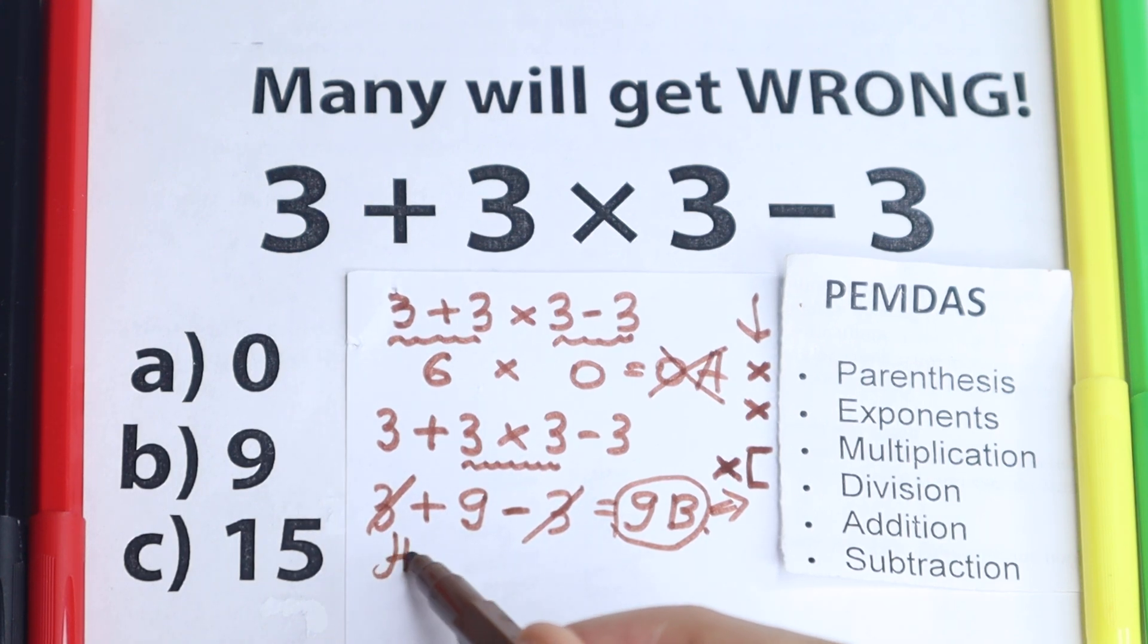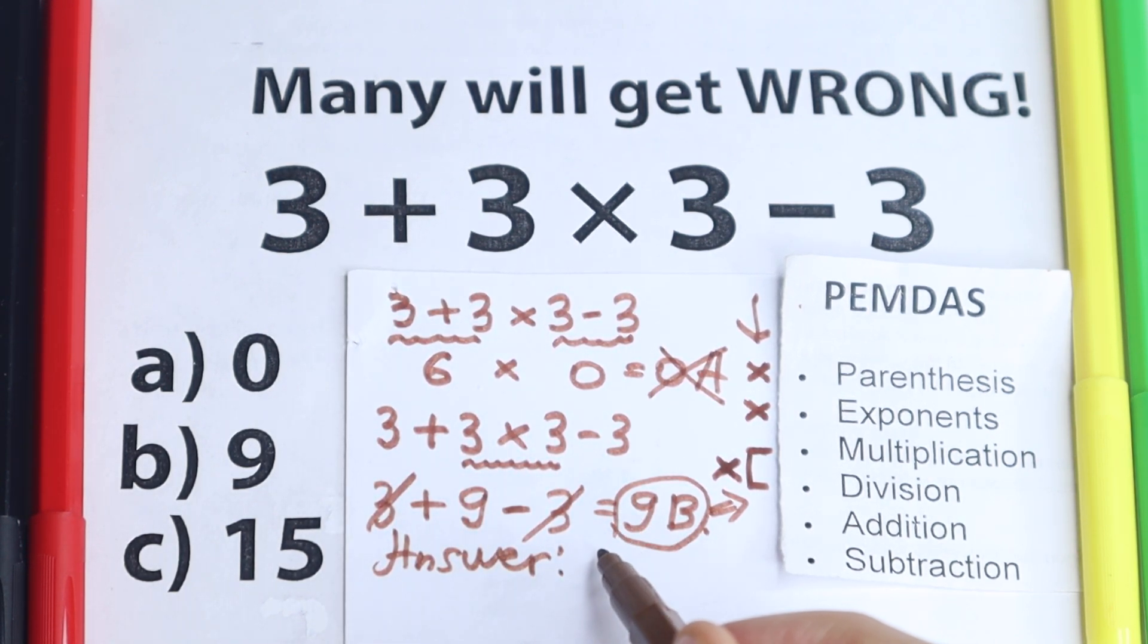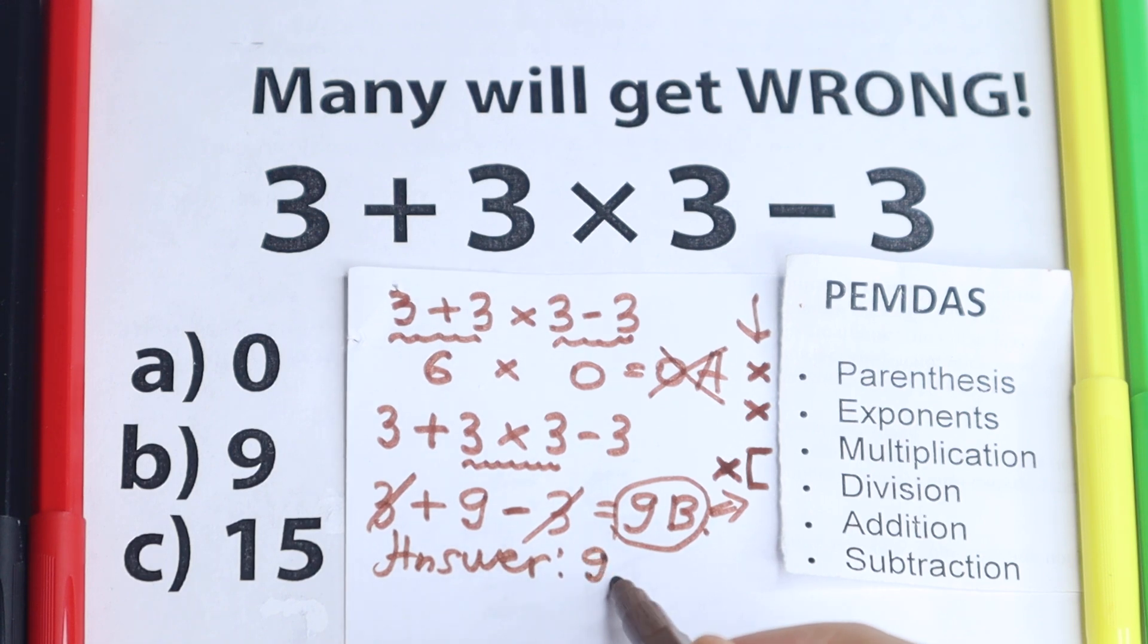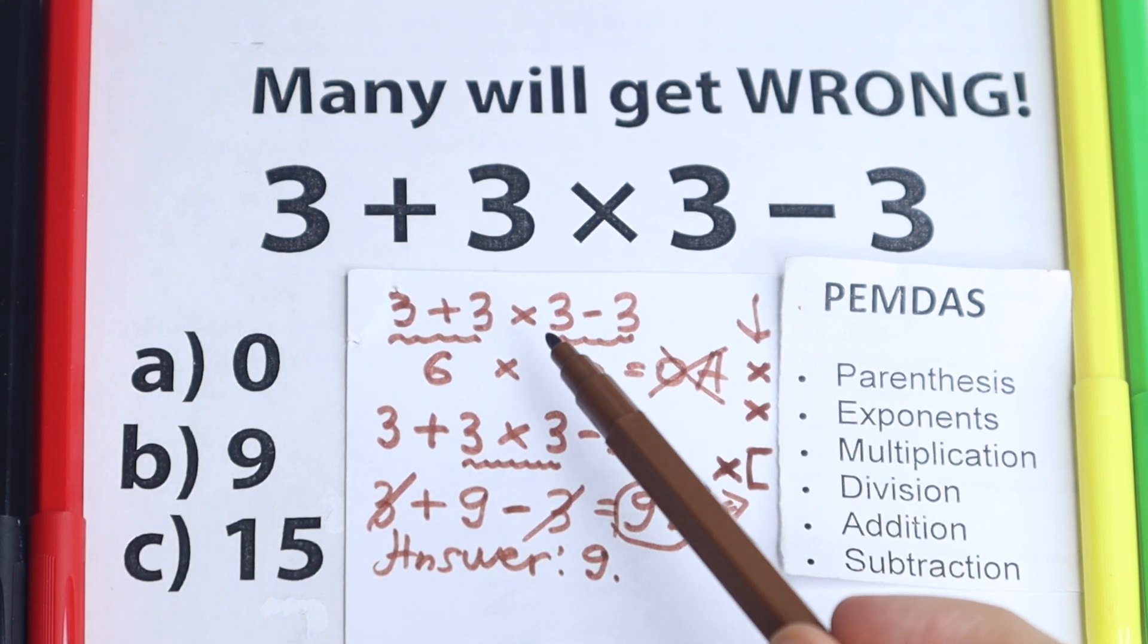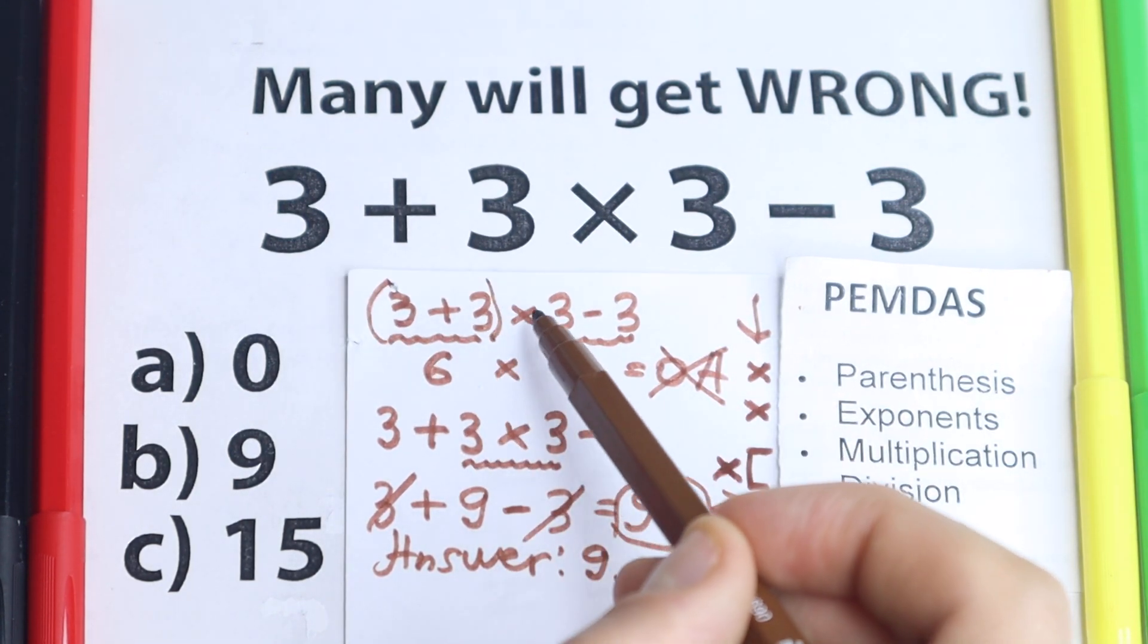We can write our answer. This is option B, this is 9. But here is our last question. How can we create this option 0? We need just to put these parentheses.